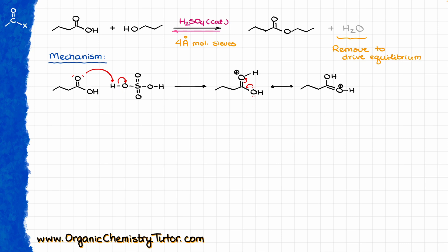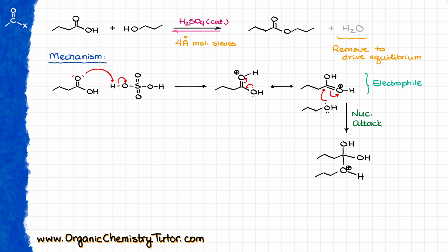Now that we know where we are protonating our carboxylic acid, the next step is the nucleophilic attack. The protonated carboxylic acid is a pretty good electrophile, and the only nucleophile we have floating in the system is our alcohol — propanol. The alcohol performs a nucleophilic attack on the carbonyl carbon, with the electrons attacking the carbon and the electrons from the C=O double bond going onto the oxygen, creating a new carbon-oxygen bond.